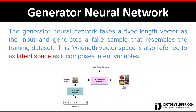Here you can see this latent vector is given to this generator network and it produces a fake sample or generated image. This fixed-length vector is drawn randomly from a Gaussian distribution and is used to seed the generative process. This fixed-length vector space is also referred to as latent space, as it comprises the latent variables, which consist of the compressed representation of the data distribution.